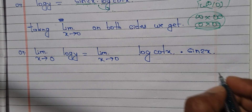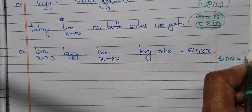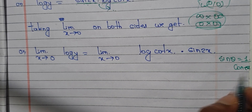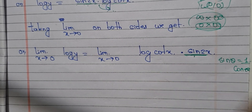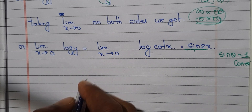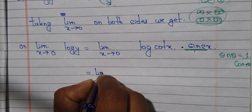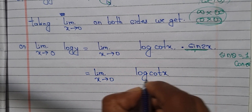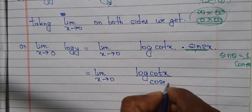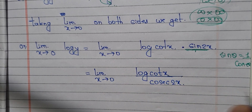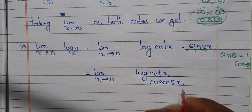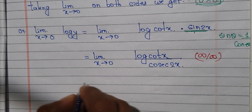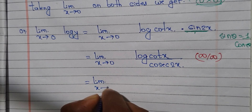We use the identity sin θ = 1/cos θ and cos θ. This leads to a cos θ = 0 situation, giving us an infinite over infinite form, so we are going to take limit x tends to 0.